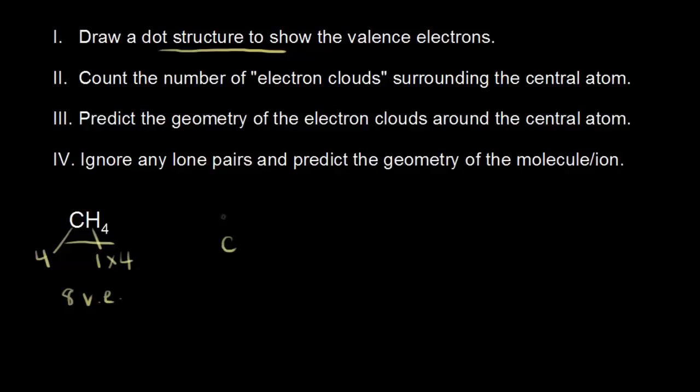Carbon goes in the center, and carbon is bonded to 4 hydrogens, so we put the hydrogens in like that. This is a very simple dot structure — we've already shown all 8 of our valence electrons: 2, 4, 6, and 8. So carbon has an octet, and we are done.